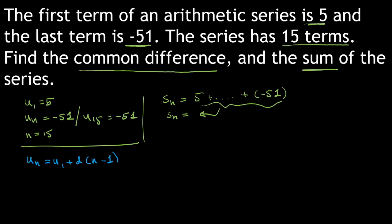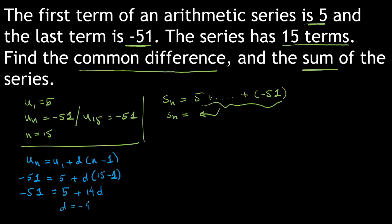Plugging in our values: minus 51 equals 5 plus d times 14. Simplifying, we get d equals minus 4. So we've found the common difference.